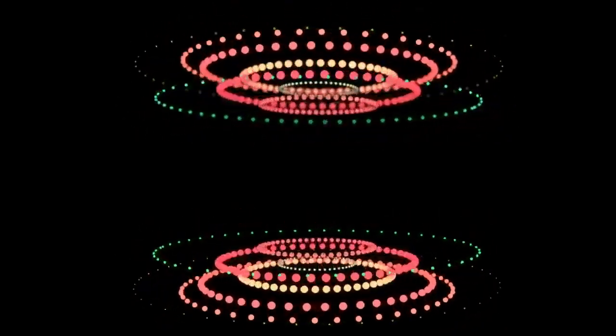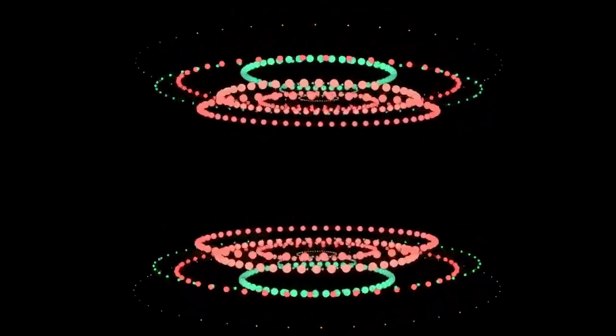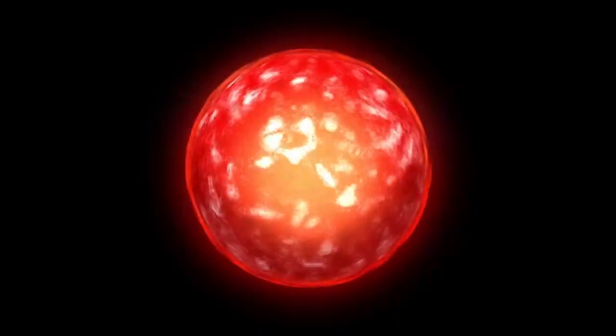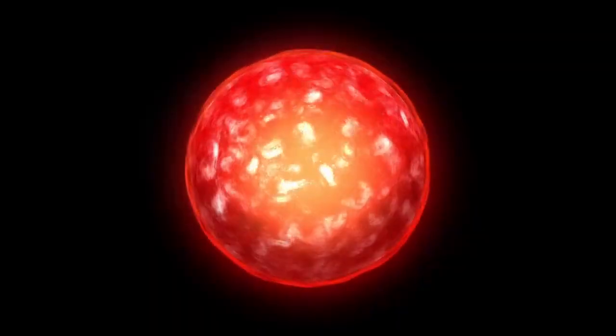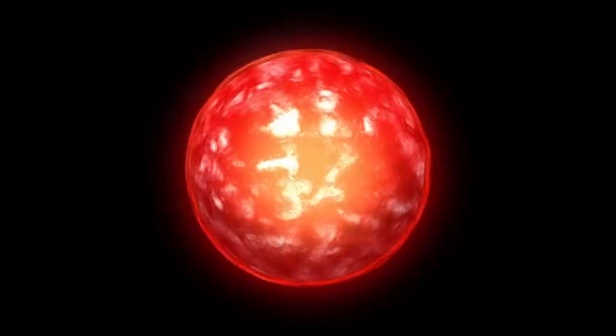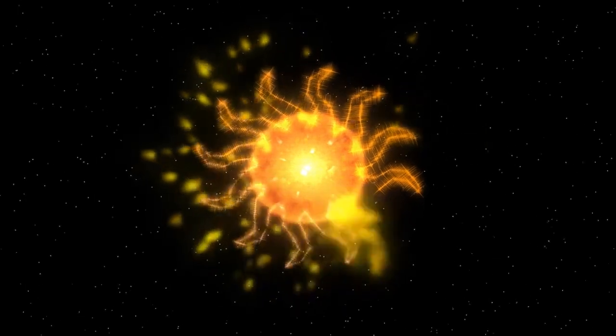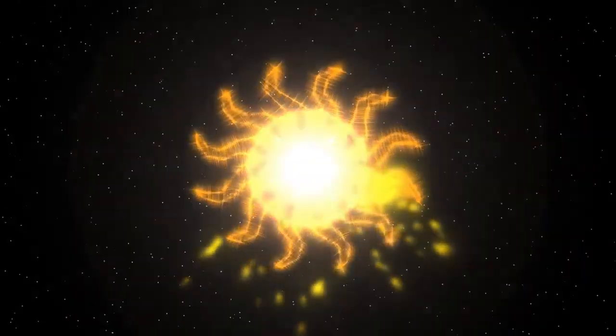One intriguing process within the star is stellar convection, where energy generated in the core rises toward the surface. This movement creates convection currents that transport energy outward, balancing the star's internal processes with its external luminosity. These currents also cause variations in brightness, manifesting as the pulsations observed from Earth.